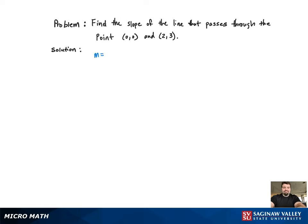To find the slope, we first need an equation. It is provided as m equals y₂ minus y₁ over x₂ minus x₁.